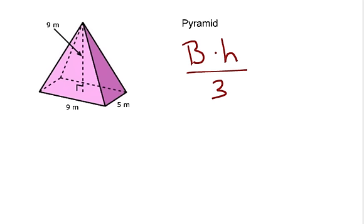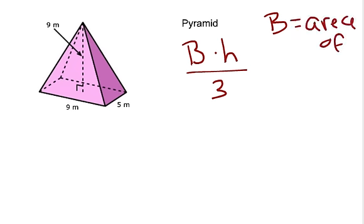This is a rectangular pyramid — sometimes called a square pyramid, but here the base is a rectangle, so it's a rectangular pyramid. The formula is: find the area of the base (capital B), multiply it by the height of the pyramid, then divide by 3, because three pyramids fit into a rectangular prism with the same size base. The area of the base is 9 times 5.